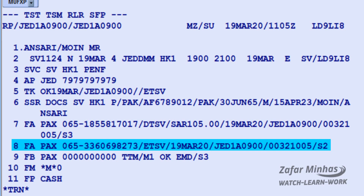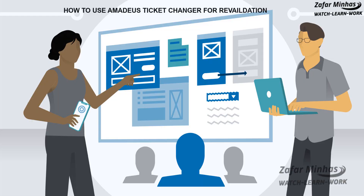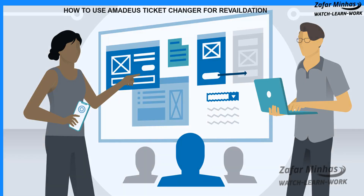The FA element is now associated to segment number 2, which means the new booked itinerary has been revalidated. That's it — you have just learnt how to use Amadeus Ticket Changer for revalidation.